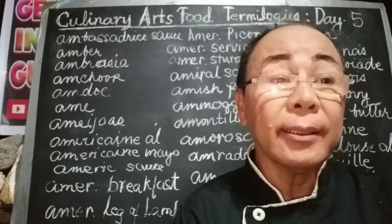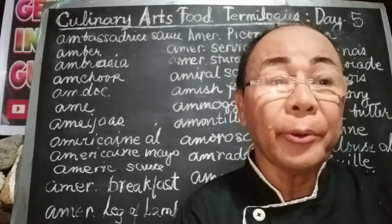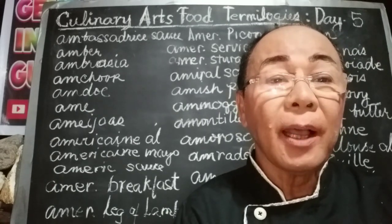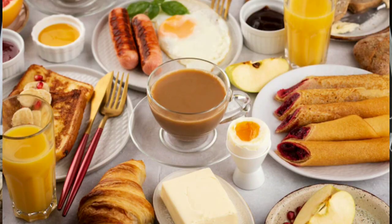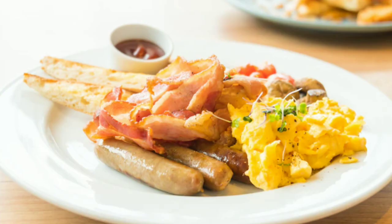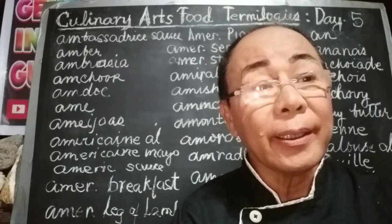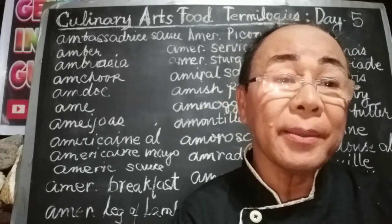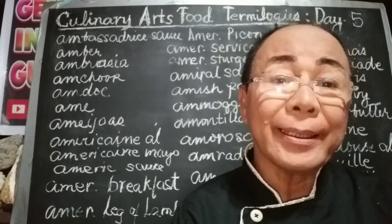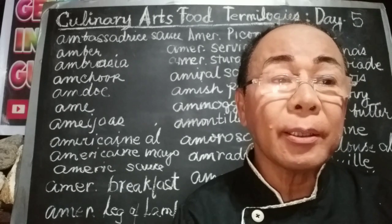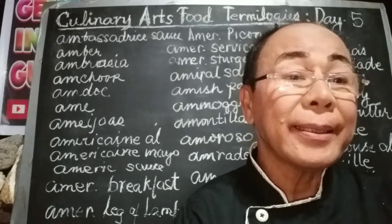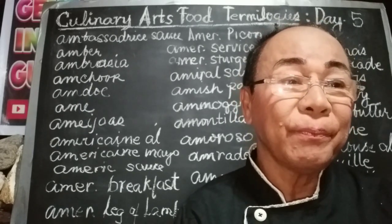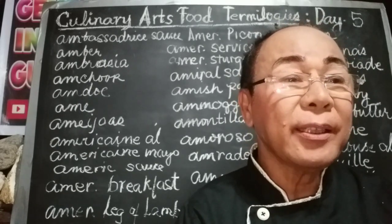American Breakfast is a breakfast of juice, eggs, and meat such as bacon, sausages, or ham, toast or pastries. Sometimes hash browns, grits, pancakes, or cereals are offered as well.